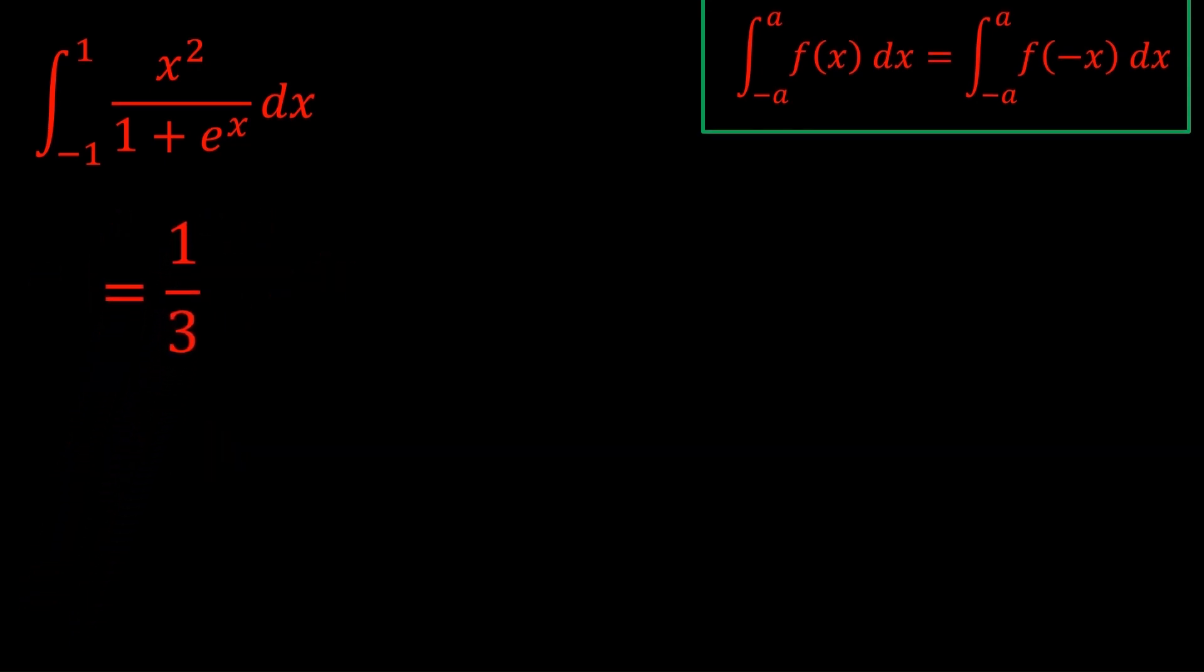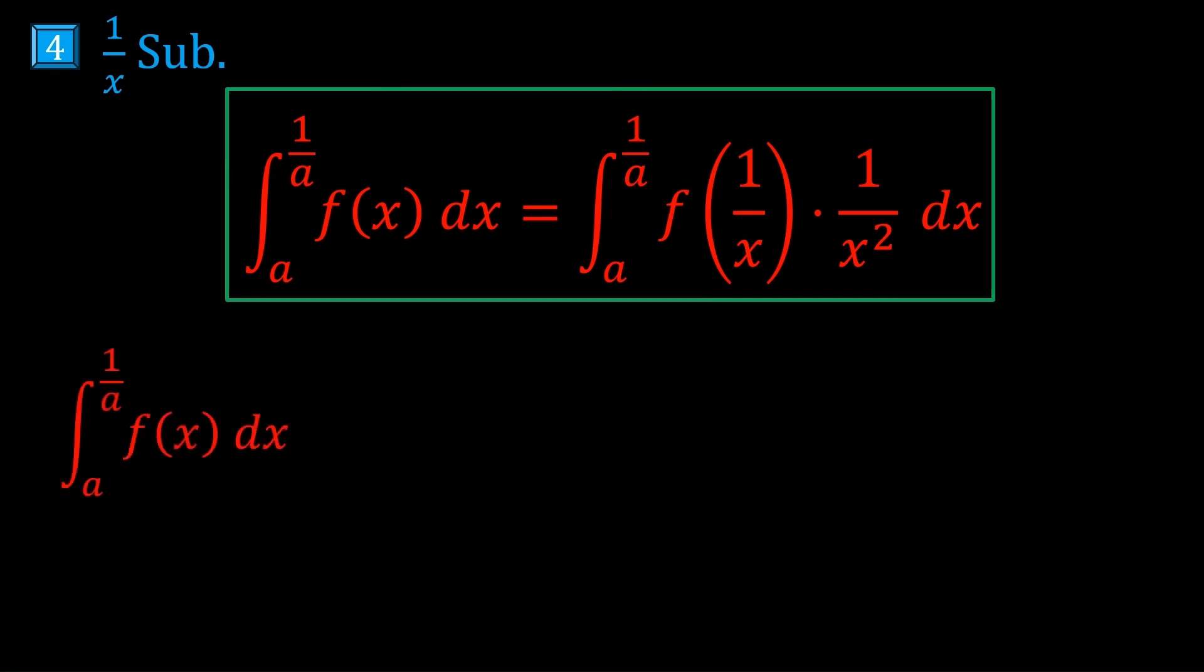Next up, we have the 1/x substitution. And this is very useful when the bounds are of the form a to 1/a. How do you prove it? Well, you just let u equal 1/x. So when x is a, u is 1/a. And when x is 1/a, u is a.